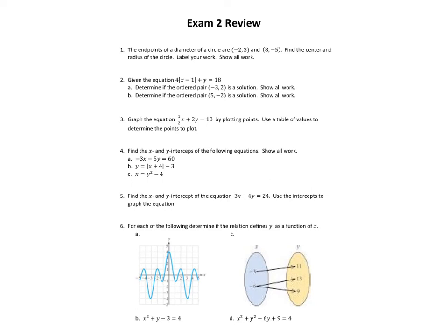To find the center of the circle, it's going to be the midpoint between those two points. So what I'm going to do first, just so we can understand what we're working with here, I'm going to go ahead and plot where those points are approximately. So negative 2, 3, approximately here, and 8, negative 5. So we're here somewhere. So I would expect the center to be somewhere in here. You expect the center to be halfway between those two points.